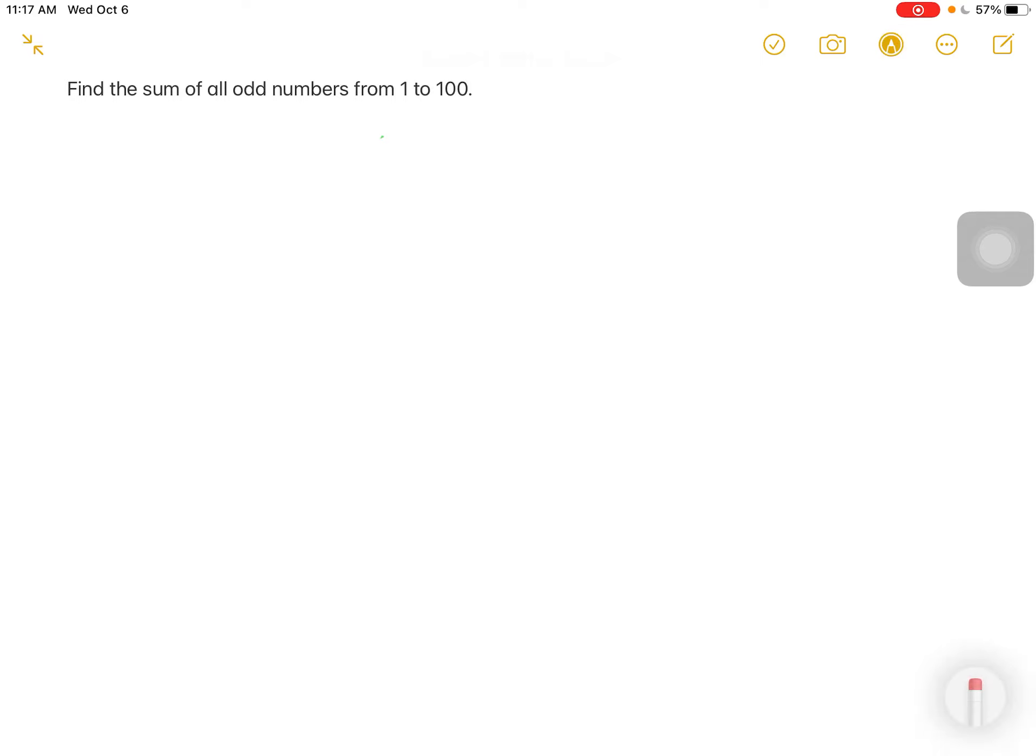So first, what are odd numbers? Odd numbers are numbers that end with 1, 3, 5, 7, and 9. All numbers ending in 1, 3, 5, 7, and 9 are all odd numbers.